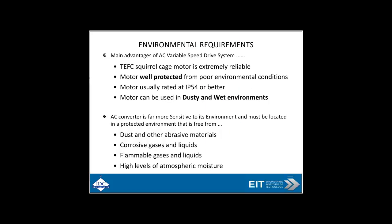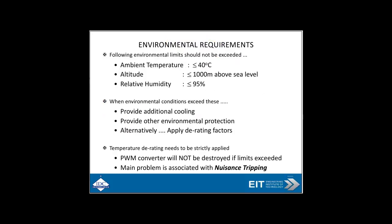Environmental requirements: the squirrel cage motor is pretty reliable and is protected for poor environmental conditions, so you can use it in dusty and wet environments. But the actual converter itself is very sensitive to dust, corrosive gases, liquids, and high atmospheric moisture, so you've got to be more wary about the converter than the motor itself. Environmental requirements include ambient temperature less than or equal to 40 degrees, altitude less than 1,000 meters, and relative humidity less than 95 percent. These are all very important issues in the design of variable speed drives.